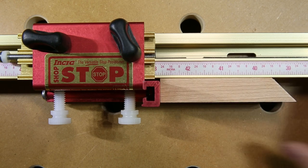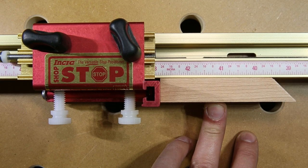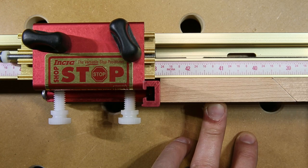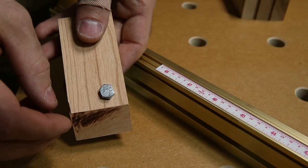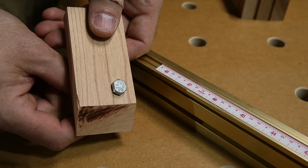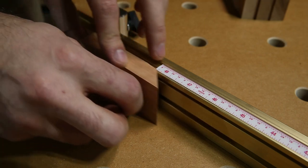And to cut the pieces to length I want to use one of these shop stops. I'm using an offcut to hold the end of my miters so that they don't get trapped behind that stop.